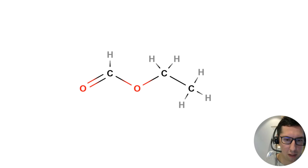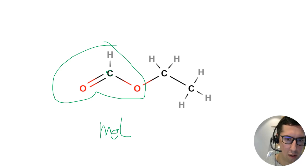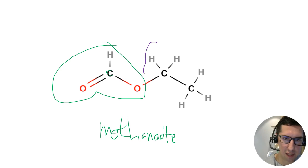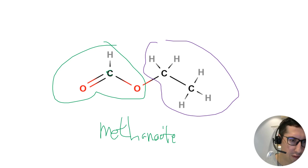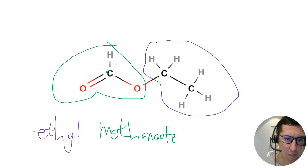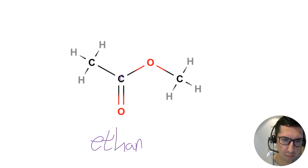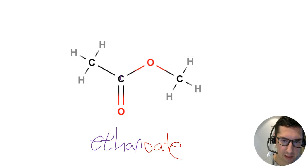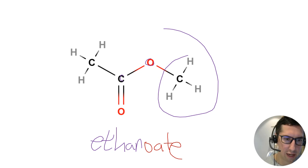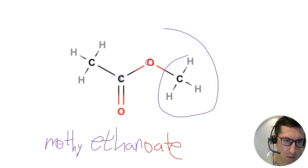For the next ester, the carbon with the double-bond oxygen has one carbon, giving methanoate again. The part attached to the singly bonded oxygen has two carbons: 'eth', add 'yl' for ethyl. So this is ethyl methanoate. In the final example, the double-bond oxygen carbon has two carbons total, giving ethanoate. The singly bonded oxygen side has one carbon: methyl. So this is methyl ethanoate.